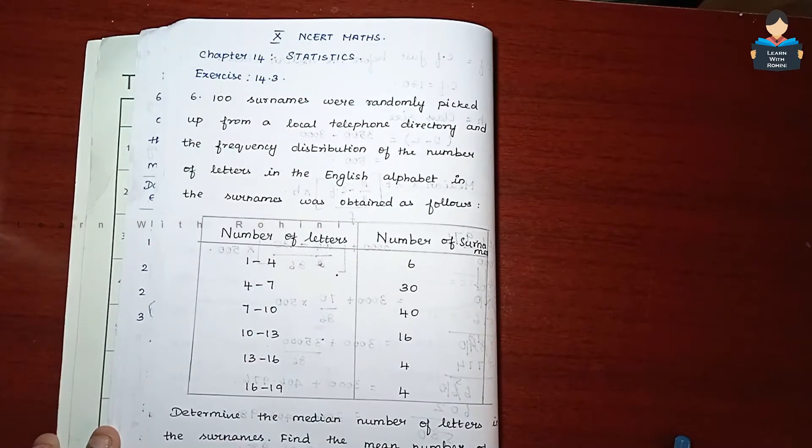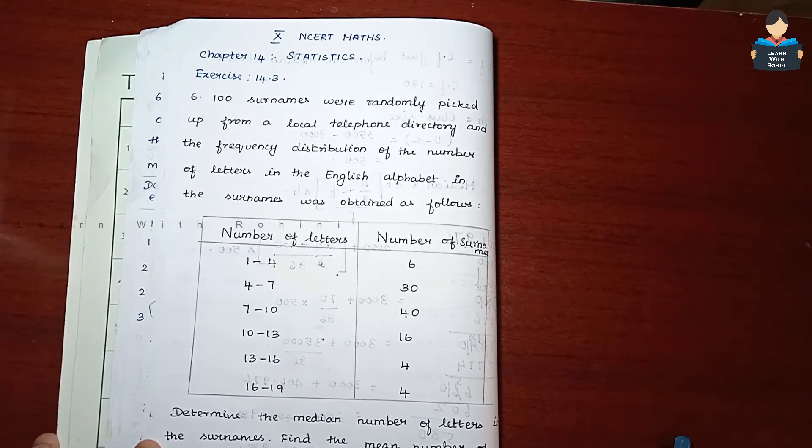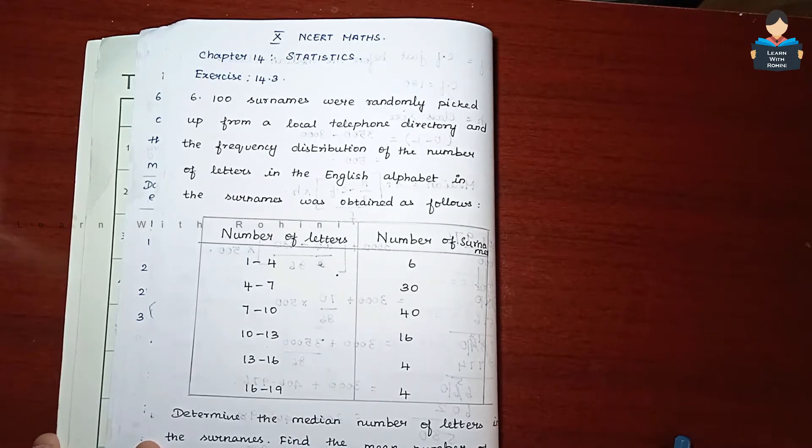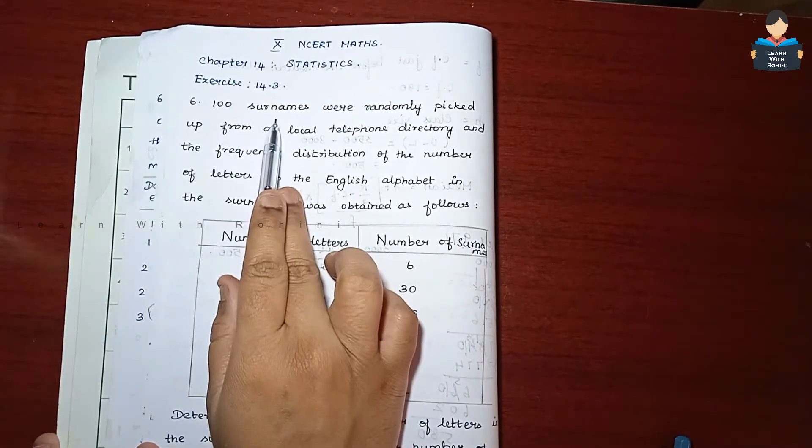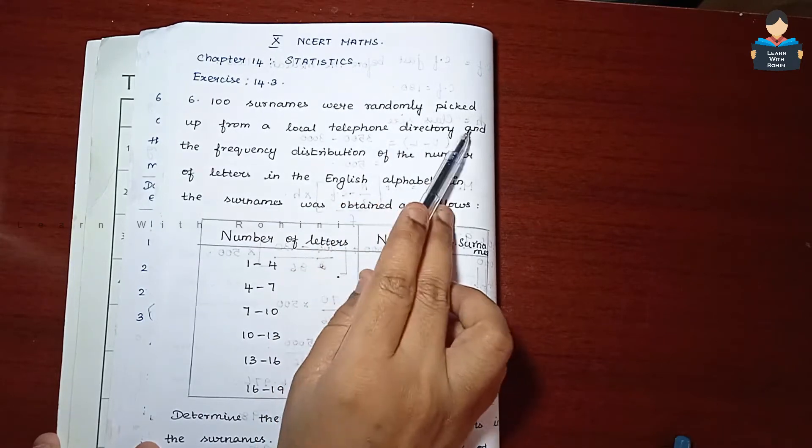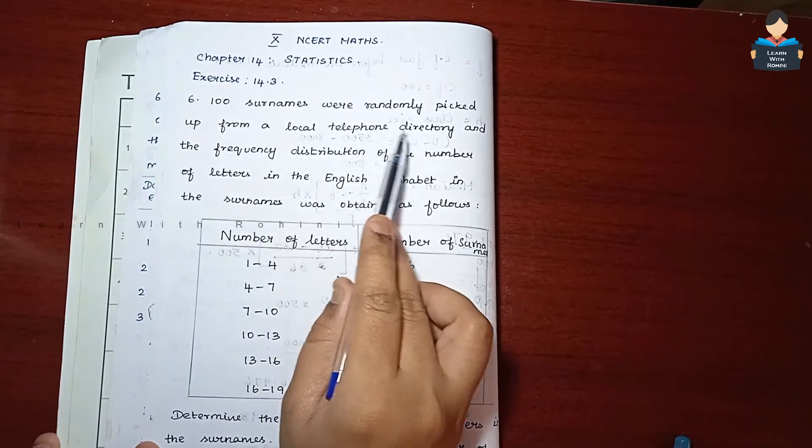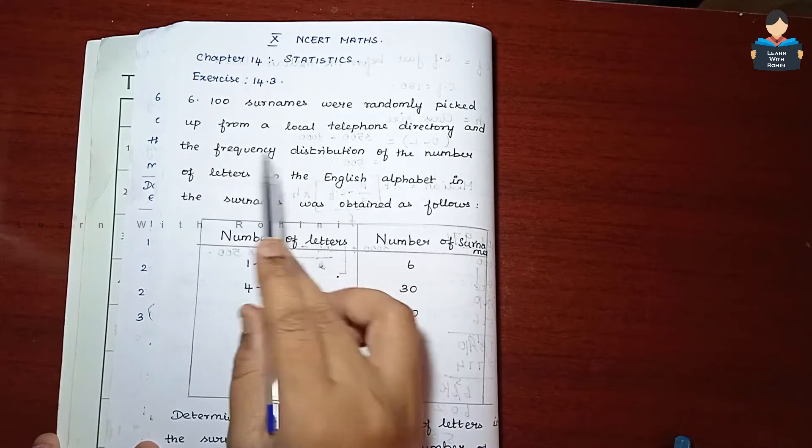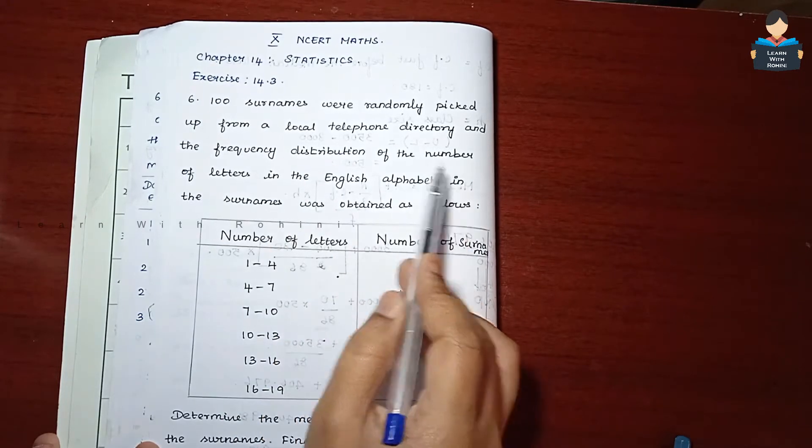Hello everyone, welcome to our channel. In this video, Chapter 14 Statistics, Exercise 14.3, sixth sum. One hundred surnames were randomly picked up from a local telephone directory and the frequency distribution of the number of letters was obtained.